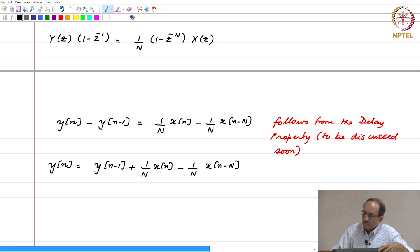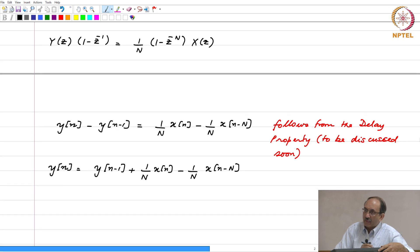One advantage of this is that it has fewer additions—the recursive implementation has fewer additions. You might wonder why you need to implement it like this rather than taking n samples and averaging all the time; you have fewer additions in this recursive implementation.